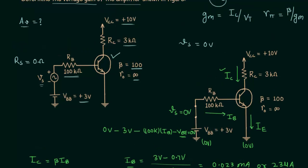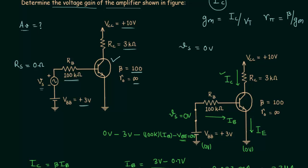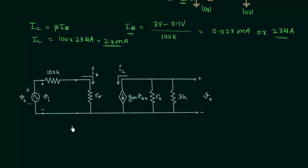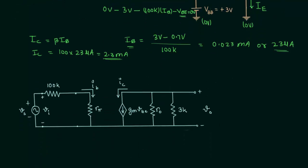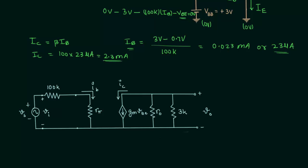Now we obtain the AC equivalent circuit with the transistor equivalent model. We short circuit all DC voltage sources — VBB and VCC. There are no capacitors so step two is skipped. We then replace the transistor with the hybrid pi model. Since R0 equals infinity, we replace R0 with an open circuit.